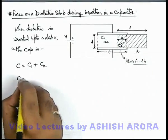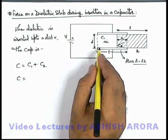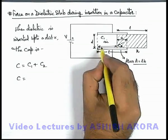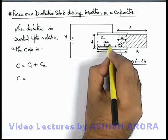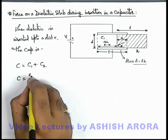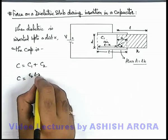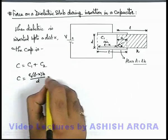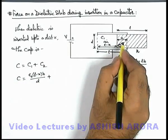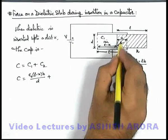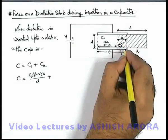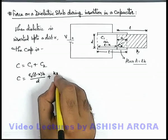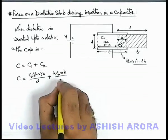So in this situation, this C1 we can write as epsilon not A by d. The length of the plate for the air capacitor we can write as l minus x. So its capacitance will be epsilon not times (l minus x) times b divided by d, plus the capacitor C2 is having a plate area which we can write as xb, and its dielectric constant is K, so its capacitance can be written as K epsilon not xb by d.